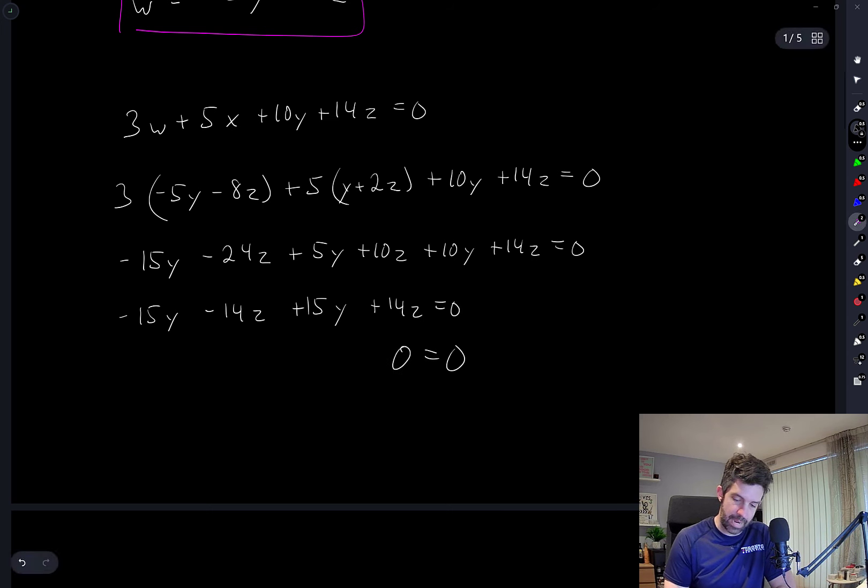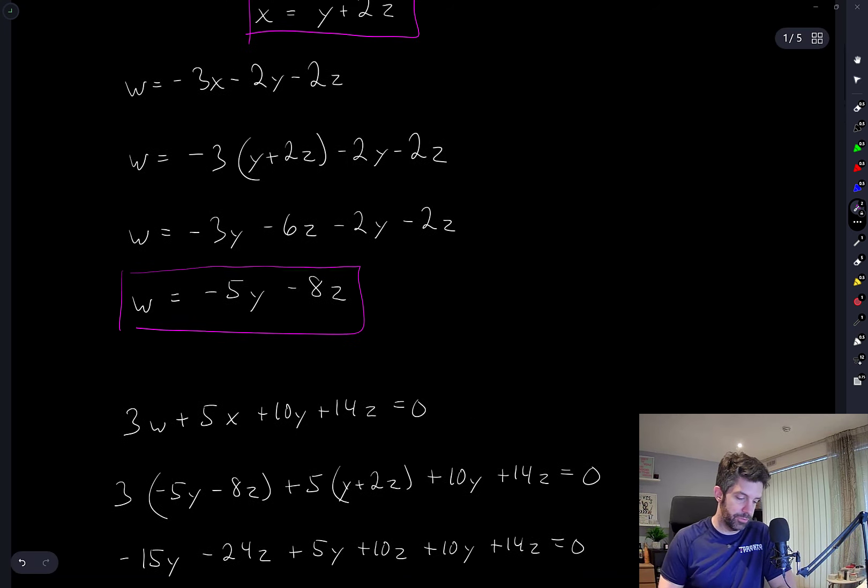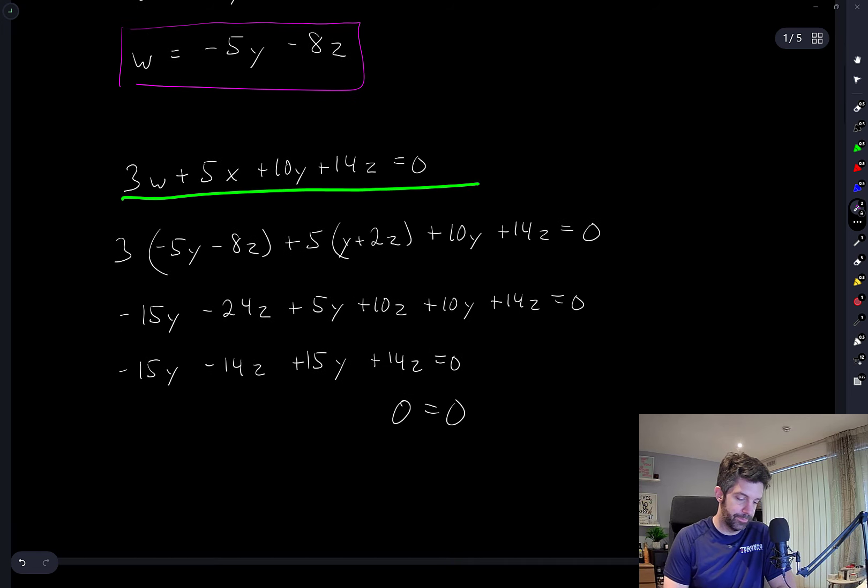Okay, so now we're starting to see hints about the structure of these equations and the solution. When I do this substitution for W and X into the third equation, we end up with cancellation of everything in the equation.